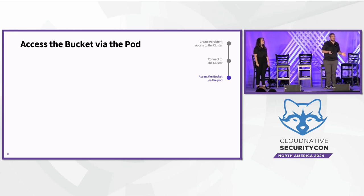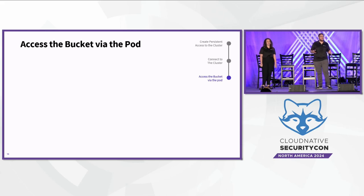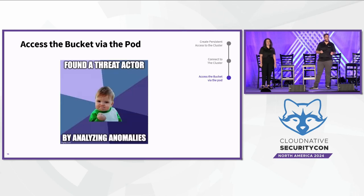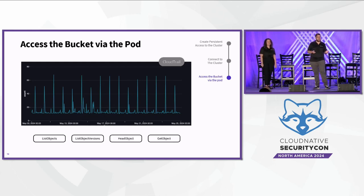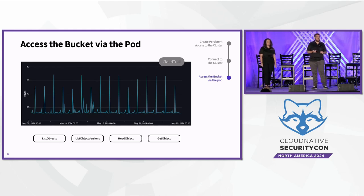Now we understand how the threat actor can use the pod's role to access the sensitive bucket. Unfortunately, there is no trivial smoking gun in the logs to identify this activity. But it's a great opportunity to talk about the necessity of anomaly analysis in threat hunting. In threat hunting, we search for threat actors that succeeded in compromising an environment without triggering critical alerts. Therefore, it's important to search for them wisely using the context we have about our environment. Here's a simple example — a graph based on CloudTrail events where the source entity is the pod's role, the target entity is the bucket, and the events are bucket access events. You can see a pattern of application behavior, but if you look deeper, there is an anomaly between May 12th and May 17th. In threat hunting, we should take these events and investigate them — what are the source IP and user agent, and consider if we expect to see these event names in this context.